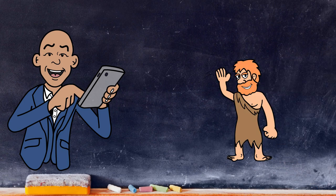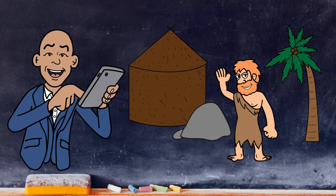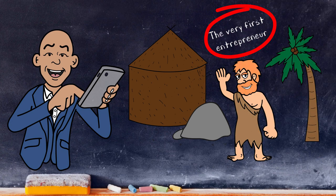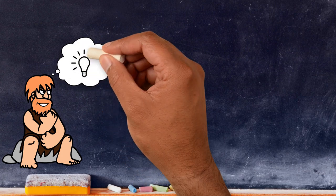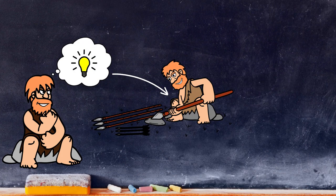Here's Rab the Rockstar. He lived in the Stone Age and was the world's original entrepreneur. That's right, the very first entrepreneur. You see, he came up with a business idea to make and provide tools to hunters to help them catch their prey.